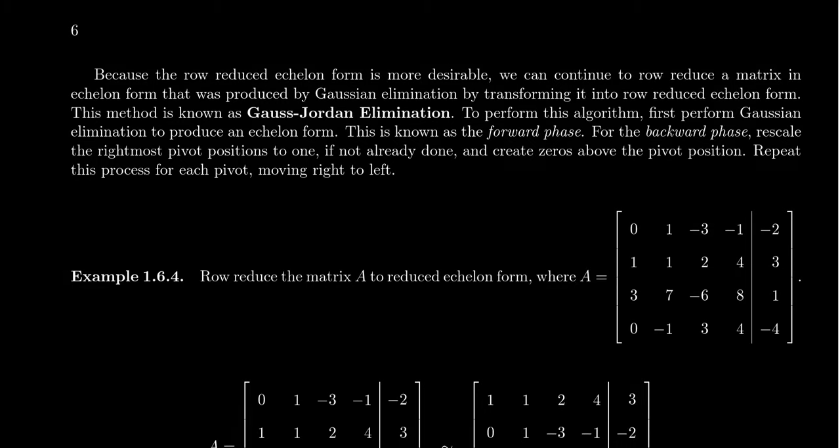In the previous video, we learned about Gaussian elimination and how this can be used to solve a system of equations by row reducing the augmented matrix to an echelon form, and then solving the corresponding system of equations from the echelon form using the technique of back substitution.